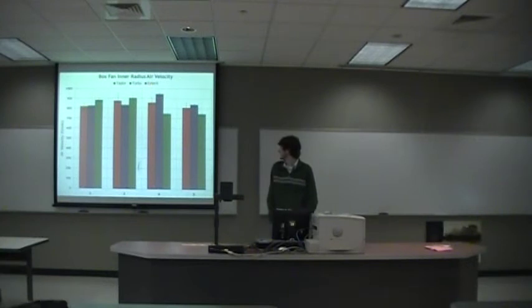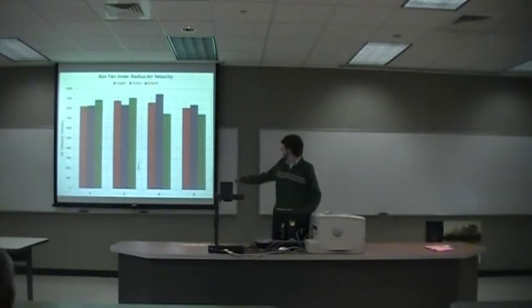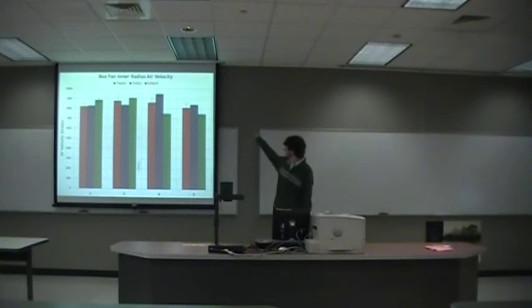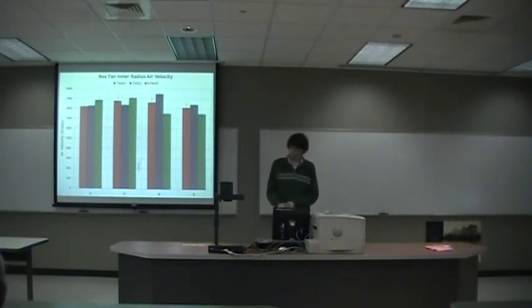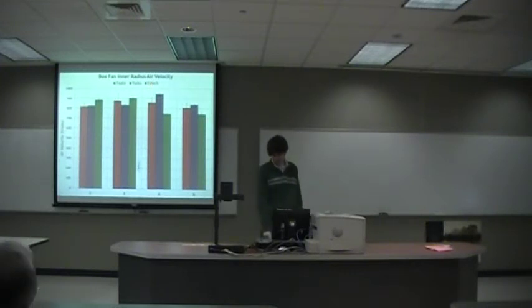However, interesting to note is that the Taylor anemometer — shown in the first column in red — was a lot more inconsistent, as you can see from the error bars associated with it. The error bars are much larger than those of the other two devices.